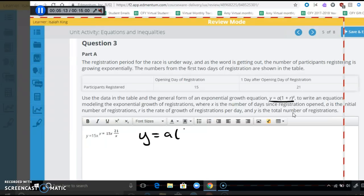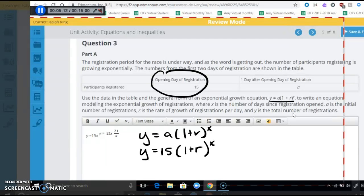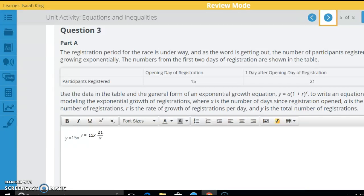So we're going to go ahead and plug into there. So y equals a times 1 plus r to the x power. So we're not going to know what y and x are. So we're going to leave those. But a, which is the initial amount of registrants, is going to be right here, opening day. So there's 15 of those. The 1 doesn't change. The rate, we don't know either. And then we go ahead and put x here.